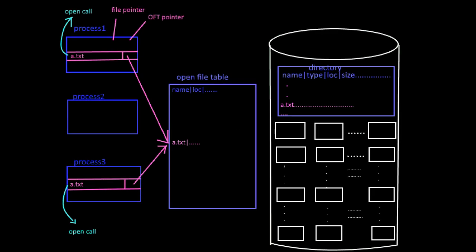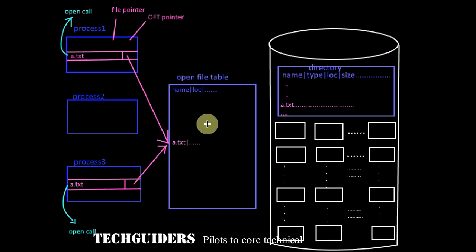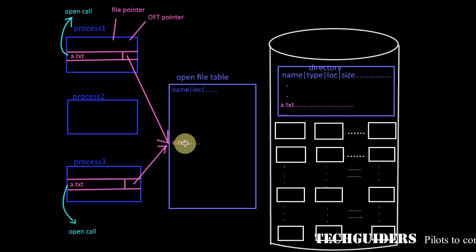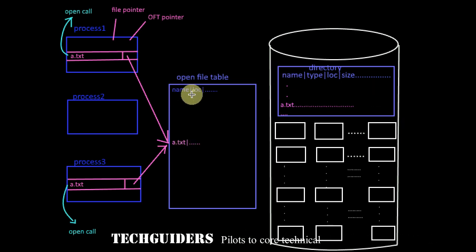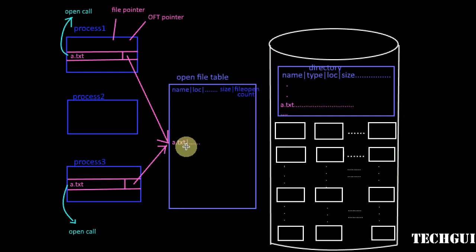For all further operations of the process on the file until it is closed, this pointer will be used. This avoids any further searching, because from this per-process table entry it points to the process-specific information, and from there we get a pointer to the global open file table entry. The global information includes: the disk location of the file, the size of the file, and the file open count — the number of instances of this file currently open in the system.